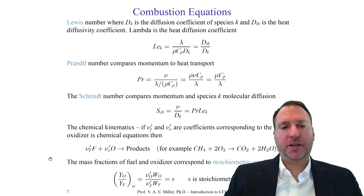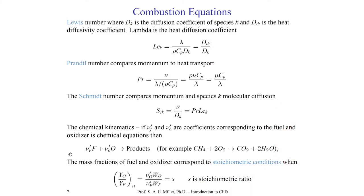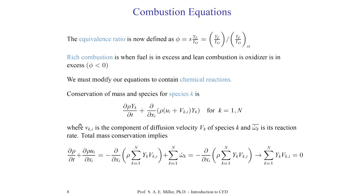We also have particular chemical kinetic equations as you may have seen in chemistry, shown at the bottom of this slide. One of the most important quantities in CFD and combustion is the equivalence ratio — the ratio of the stoichiometric ratio times the fraction of fuel divided by the fraction of oxygen or oxidizer. Rich combustion is where the fuel is in excess, and lean combustion is where the oxidizer is in excess. The equivalence ratio is often defined when talking about experiments.